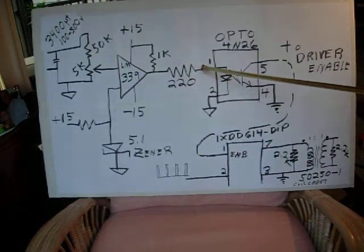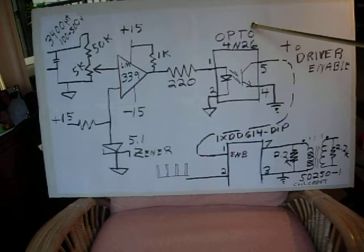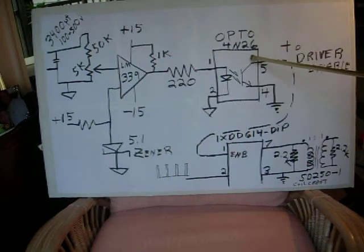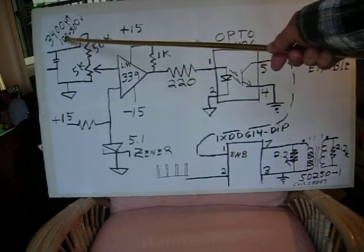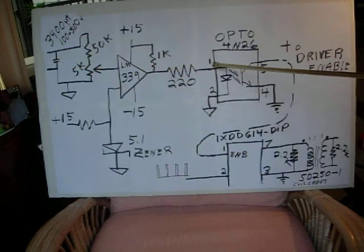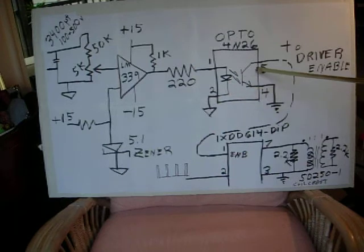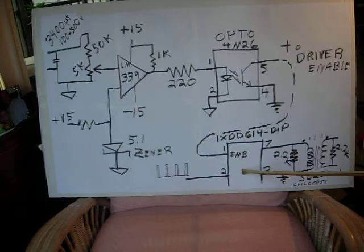220 ohm resistor going into an opto isolator which is a 4N26 pin 1. And when the level is at 100 volts, this guy turns on, turns the opto on and grounds out the enable line for the driver chip down here.